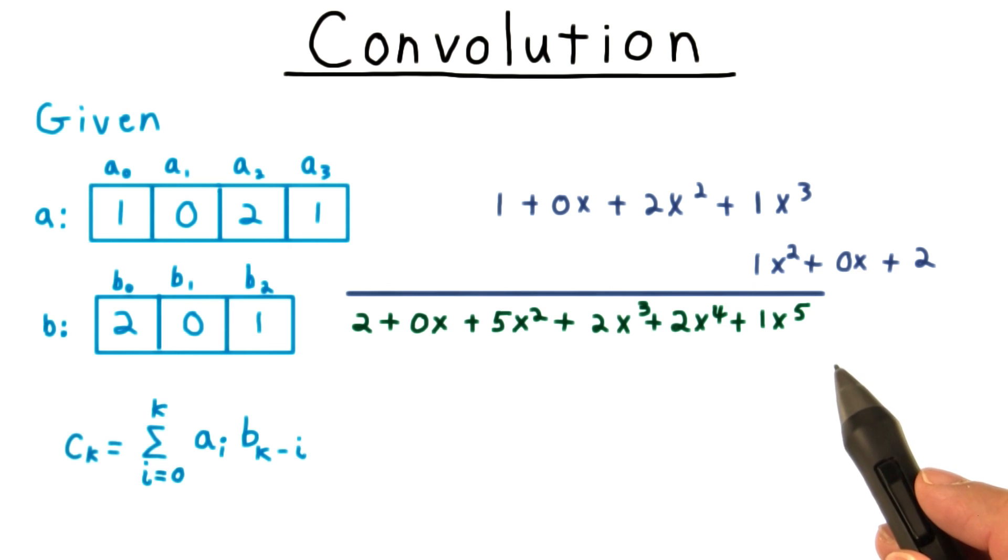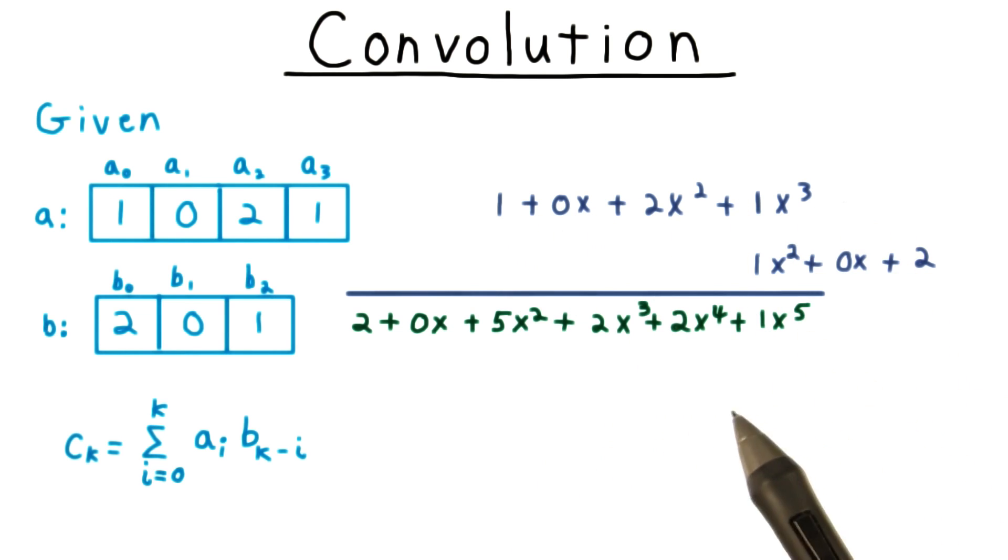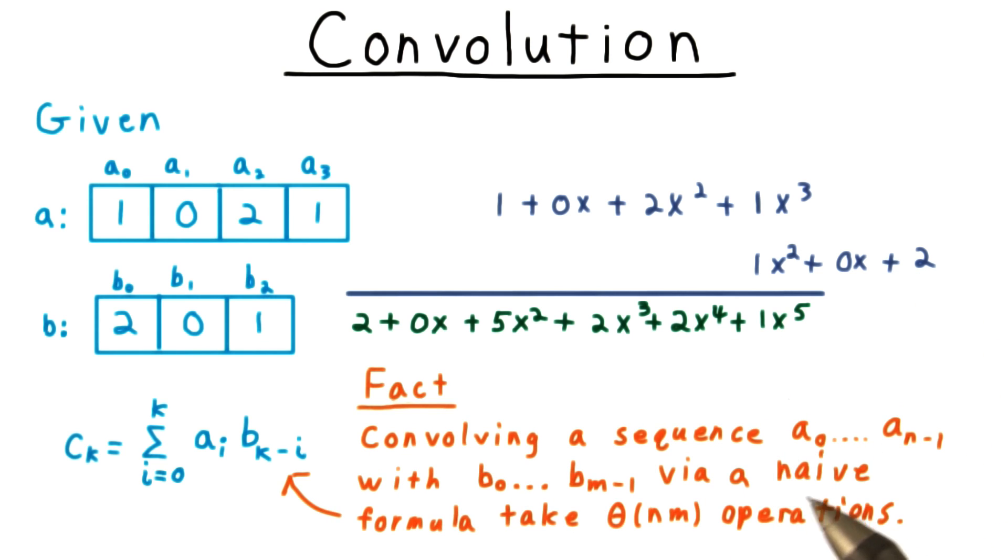How long does this process take? Well, for each element in the longer sequence, we had to do as many multiplications and additions as there are elements in the shorter sequences. Sometimes it was a little shorter around the edges, because the shorter one ran off the edge of the longer one, but on average it was at least about half. Therefore, we can say that convolving two sequences via the naive strategy outlined here takes theta n times m operations, where n and m are the lengths of the sequences.